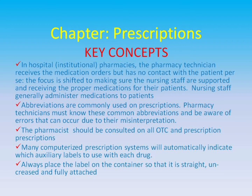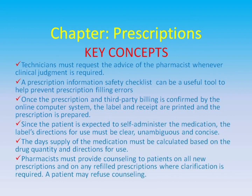The pharmacist should be consulted on all OTC and prescription prescriptions. Many computerized prescription systems will automatically indicate which auxiliary labels to use with each drug. Always place the label on the container so that it is straight, uncreased and fully attached. Technicians must request the advice of the pharmacist whenever clinical judgment is required. A prescription information safety checklist can be a useful tool to help prevent prescription filling errors. Once the prescription and third-party billing is confirmed by the online computer system, the label and receipt are printed and the prescription is prepared. Since the patient is expected to self-administer, the label's directions for use must be clear, unambiguous and concise. The day's supply of the medication must be calculated based on the drug quantity and directions for use.